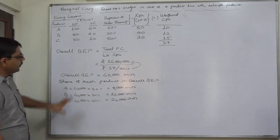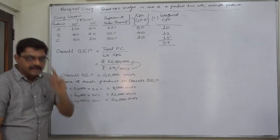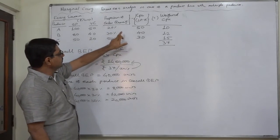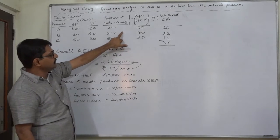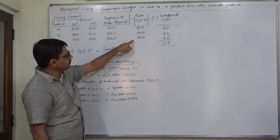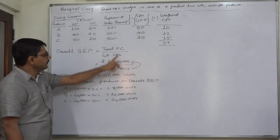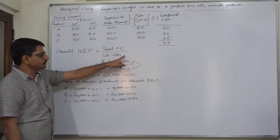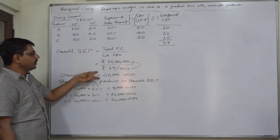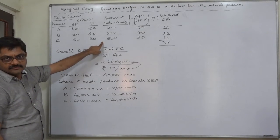This is the interpretation of overall BEP as well as the share of each product in the overall BEP. To repeat the rule: when the percentage or proportion of sales quantity is available from the question, calculate the weighted contribution per unit by multiplying the contribution per unit by the percentage of sales quantity. Divide the fixed cost by that weighted contribution per unit — the result will be the overall BEP, which should be split in the ratio given in the question.